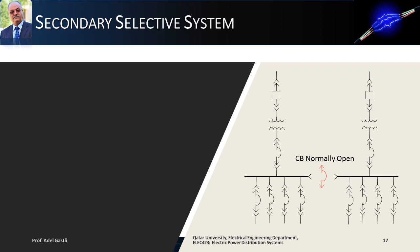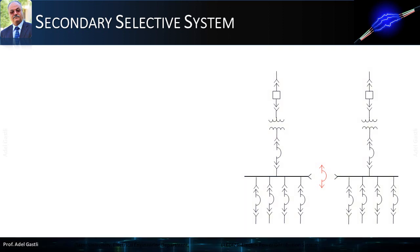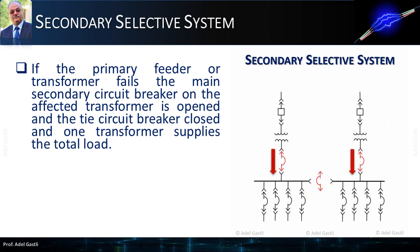Another type of loop system is the secondary selective system. In this system, pairs of unit substations are connected through a normally open secondary tie circuit breaker, shown in red color. When a fault occurs on one of the main feeders or transformers, the secondary bus bars are connected with the secondary tie circuit breaker. If the primary feeder or transformer fails, the main secondary circuit breaker on the affected transformer is opened, and the tie circuit breaker is closed, so one transformer supplies the total load.